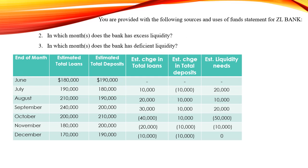Let's move to questions two and three: in which months does the bank have excess liquidity and in which months does it have deficient liquidity? To determine this, we look at the last column — the estimated liquidity needs. When the estimated liquidity needs are positive, the bank has deficient liquidity. When negative, the bank has excess liquidity or a surplus. When it is zero, like in December, the bank has sufficient liquidity — neither excess nor deficiency.